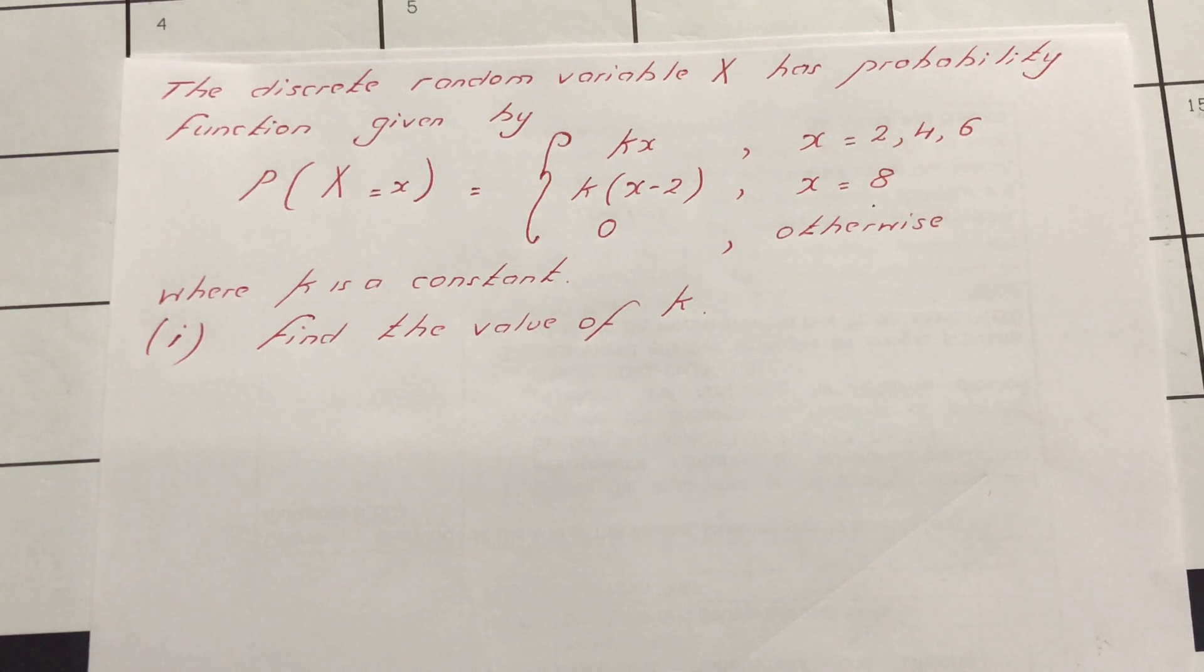Since we are dealing with discrete random variable x, we know that we need to draw the probability distribution table, which consists of the values of x which we have been given: 2, 4, 6, and 8, and then find the corresponding probabilities from the probability function.